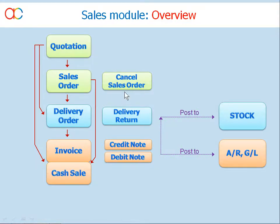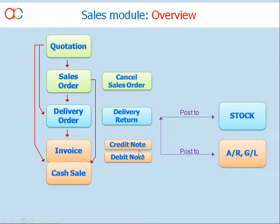Secondly, document modification. Besides the ordinary edit and cancel functions, at the sales order level you may use Cancel Sales Order to partially or fully cancel a sales order. This is traceable and will be reflected in outstanding reports. Similarly, delivery return, credit note, and debit note are mainly for adjustment in invoices that involve movement of stock.